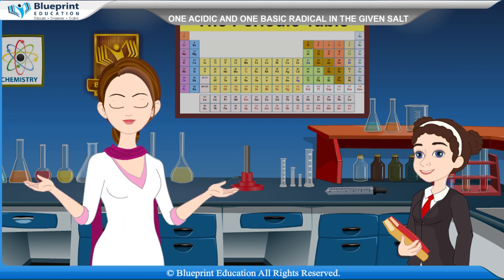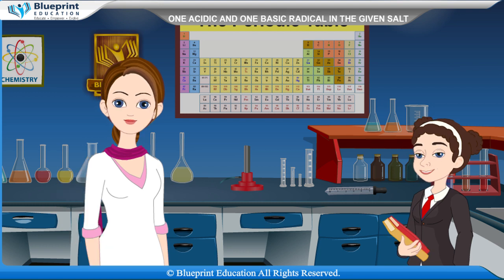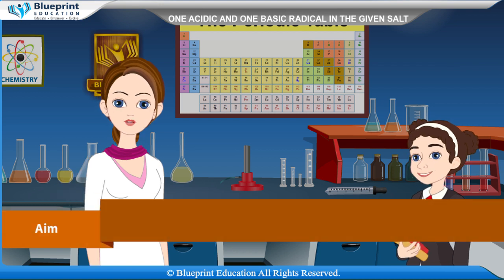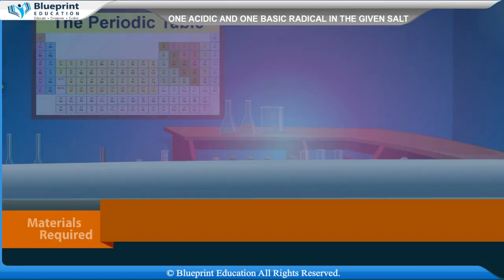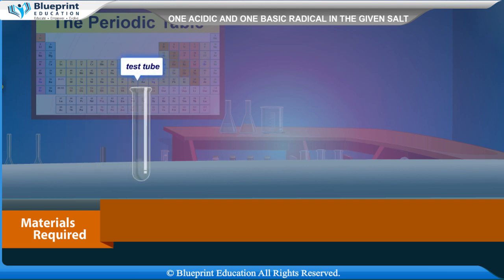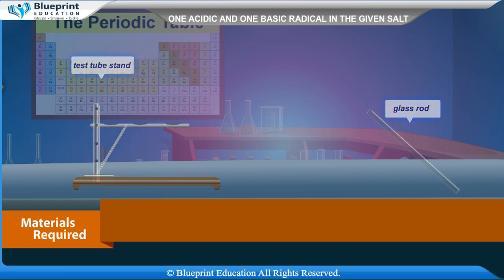Let's do an experiment to find one acidic and one basic radical in the given salt. Our aim here is to find one acidic and one basic radical in the given salt. Materials required are: test tube, beaker, test tube stand, glass rod, etc.